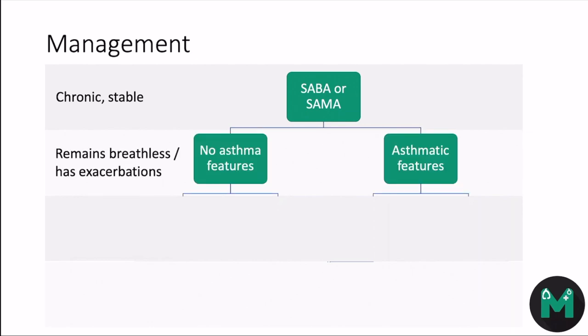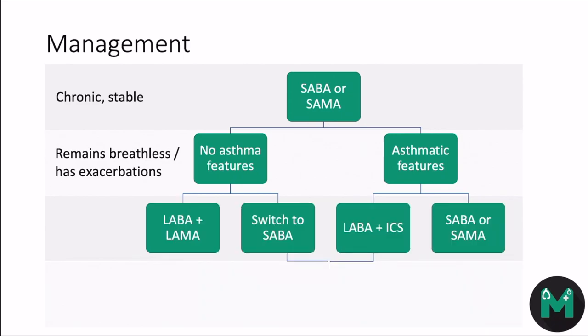If they're still breathless or have exacerbations, you need to determine if they have asthmatic features — such as a previous diagnosis of asthma or atopy, a high blood eosinophil count, significant variation in FEV1 over time, or significant diurnal variation in peak expiratory flow. If they don't have asthmatic features, you can add a LABA such as salmeterol and a LAMA such as tiotropium.